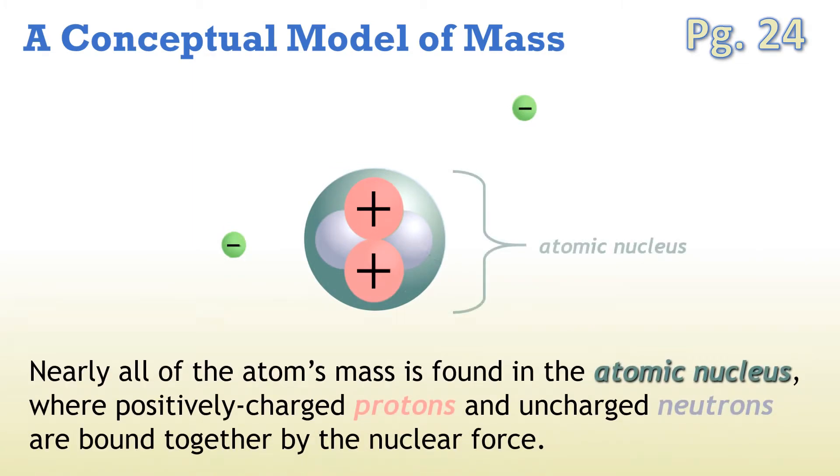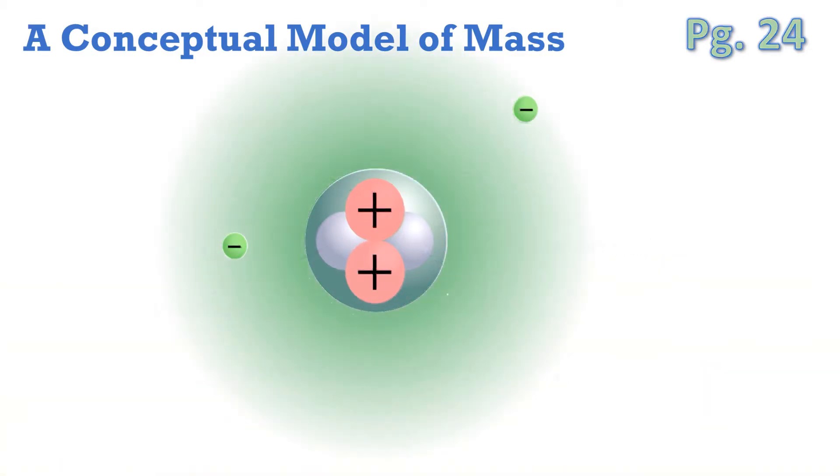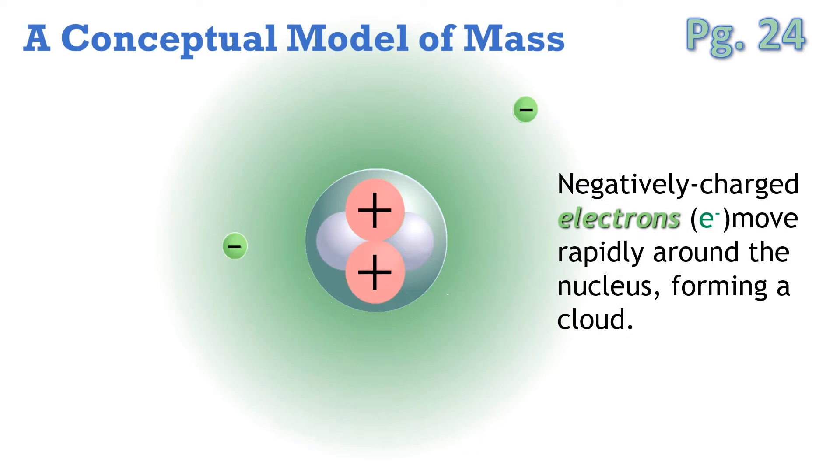When we're talking about the properties of the atom, we are interested in charge and mass. Some of the particles have charge, some have mass. Nearly all the atom's mass is found in the atomic nucleus, where positively charged protons, again shown in pink, and uncharged neutrons with a dull gray color are said to be bound together by the nuclear force. Electrons, meanwhile, are not found in the nucleus. These negatively charged particles, which are nearly massless, move rapidly around the nucleus in an area that they define, which we often call the electron cloud, or just the cloud.